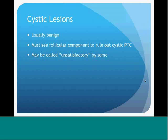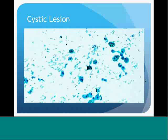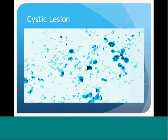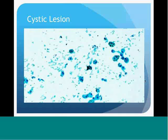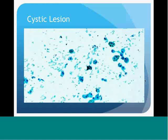Cystic lesions are usually benign and are commonly seen, appearing anechoic on ultrasound. You need to see the follicular cell component to rule out a cystic papillary thyroid carcinoma, and some cytopathologists do call these unsatisfactory. On the FNA slide, this is a Pap stain showing foamy macrophages, and the areas with brown pigment are hemosiderin—old dried blood that macrophages are consuming. If follicular cells are present and the specimen is satisfactory, this may be called a colloid nodule with post-hemorrhagic cystic change.